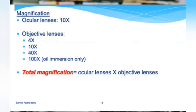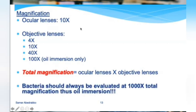Bacteria are typically evaluated at 1,000x total magnification, meaning you use the 100x objective lens. So 100x objective times 10x ocular equals 1,000x total magnification. When someone asks what magnification you're at, you give the objective lens value; total magnification is the full product.